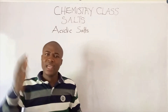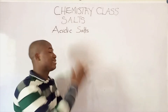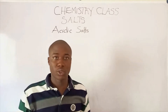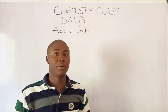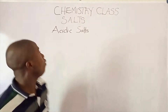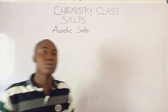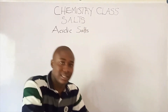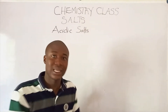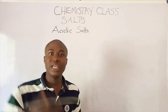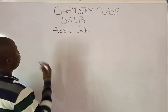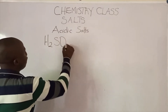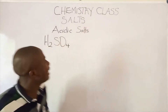Welcome back to today's video. In today's lesson I'll be teaching on acidic salts. If you've not yet watched my video on normal salts, do well to watch that — the link will be provided in the description section below. Now, what are acidic salts? Acidic salts are compounds whereby the hydrogen ion present in the acid is not completely replaced by the metallic ion or the ammonium radical. For example, we have an acid and this acid is H₂SO₄.